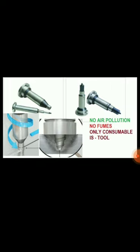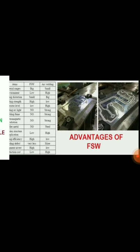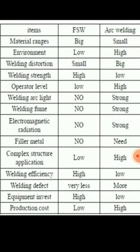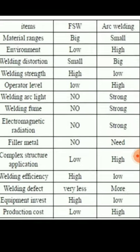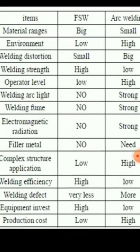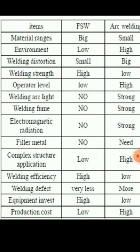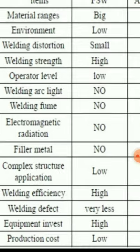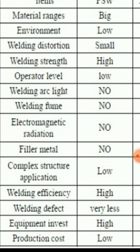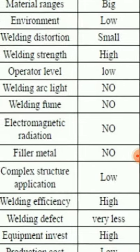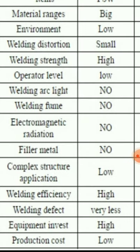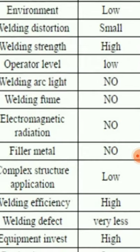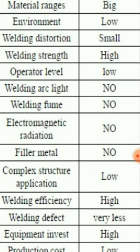There are some advantages of friction stir welding. Compared with other welding processes, it can handle a big material range from smaller to larger. Environmental pollution is very low, welding distortion is very small, welding strength is very high, operator skill level required is very low, and there is no welding arc light, no welding fume, and no electromagnetic radiation.